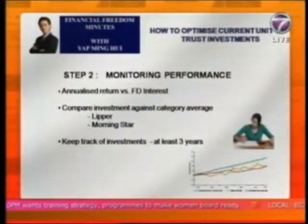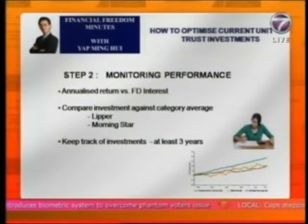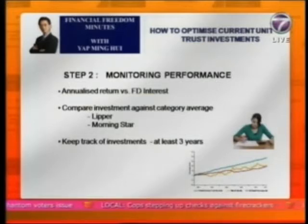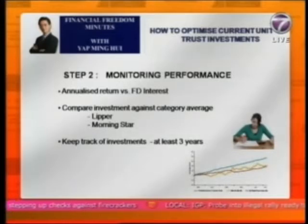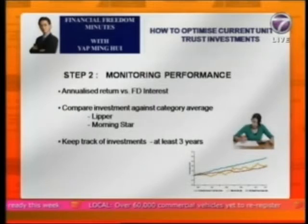The second step is to monitor the return performance of the unit trust that you have. At the very least, we need to know whether the unit trust investment that you've done makes money or not. At the very minimum requirement, we need to know that the return you generate from the unit trust investment makes more money than the fixed deposit interest. Because fixed deposit interest gives you 3% or 3.2% without any risk. So if your return is like 1% or 2%, then you can forget about the unit trust fund because putting the money in fixed deposit is better.